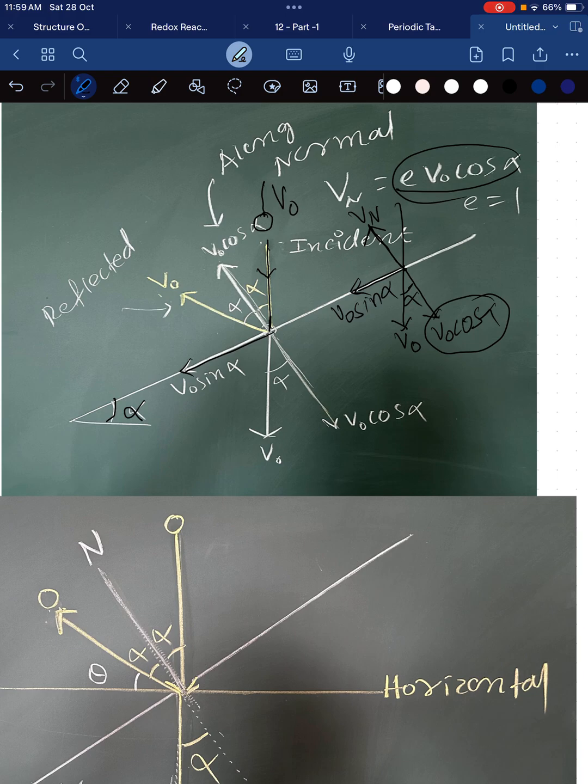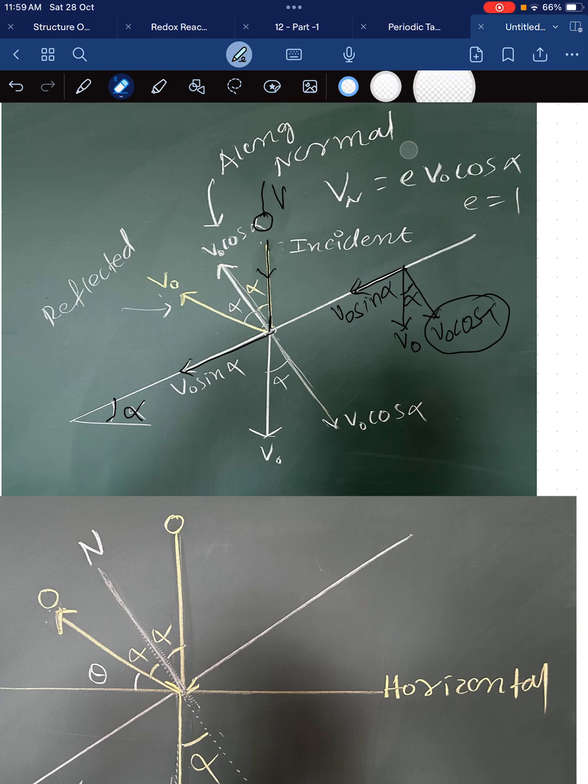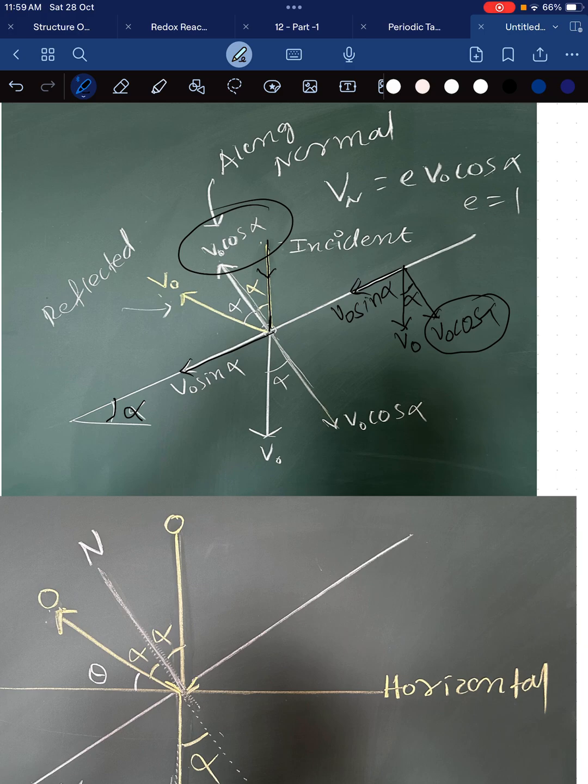But for an elastic collision, as it is given, the coefficient of restitution is 1. So the velocity in the perpendicular direction after the collision will remain same. That is, the velocity will be v naught cos alpha.